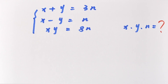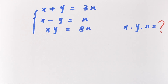Hello, welcome to best4u. How to solve: x plus y is equal to 3n, x minus y is equal to n, and xy is equal to 8n — to find the value of x, y, and n.